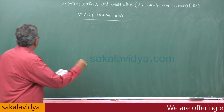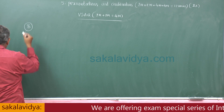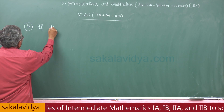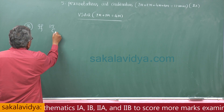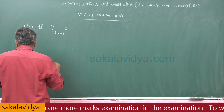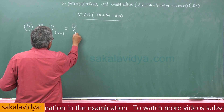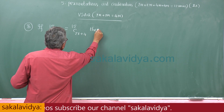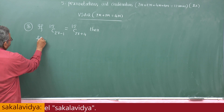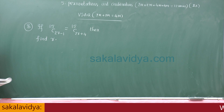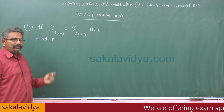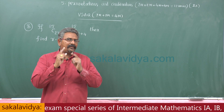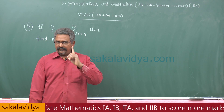Now, eighth problem: if 15C(2r-1) is equal to 15C(2r+4), then find r. This problem is not only important for board examination, it is also important for engineering entrance examinations — this question is very, very important.